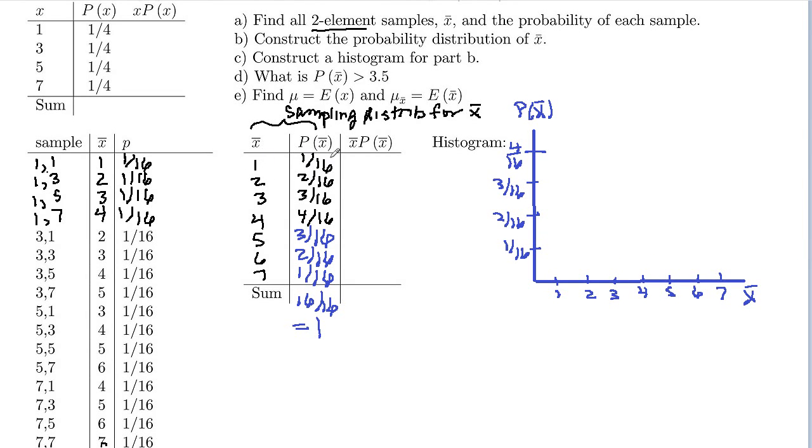So for X bar equals one, we've got a bar of height 1/16th. Center our bar over 1, height 1/16th. Two had a height of 2/16ths. Sample mean of 3 had a relative frequency of 3/16ths. A relative frequency of 4 had a height of 4/16ths. And then they started going back down. So 3/16ths, 2/16ths, and 1/16th.